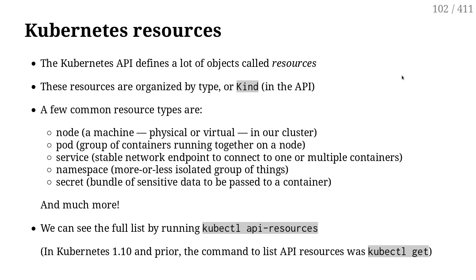In Kubernetes, we have resources. Resources are a little bit like types or classes in object-oriented programming. A resource is a specific type that has specific fields that are well-defined.